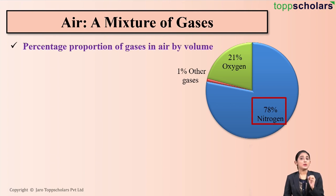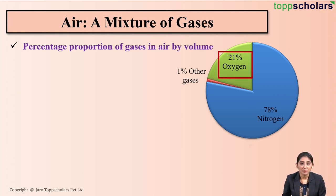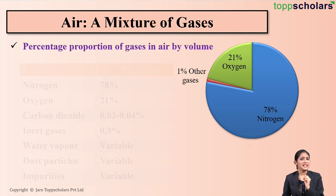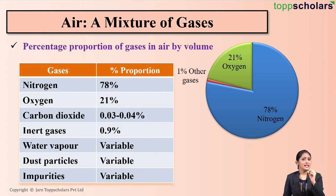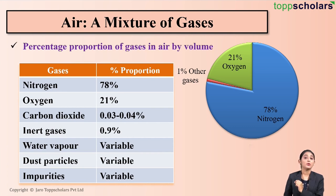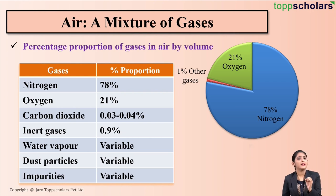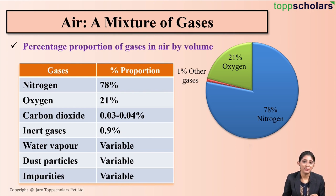Air consists of about 21% of oxygen by volume, and the rest 1% consists of other gases. Which are these other gases? These other gases constitute carbon dioxide at 0.03 to 0.04%, inert gases at 0.9%, whereas the proportion of water vapour, dust particles, and impurities in air is variable — that is, this proportion depends upon place to place and time to time.